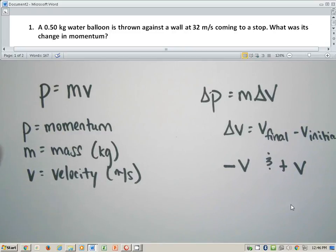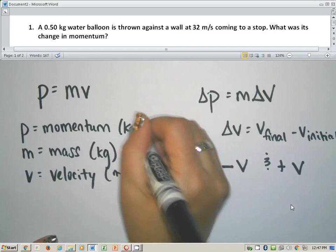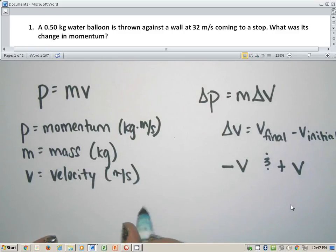We have a momentum equation right here on the left-hand side. I have everything broken down. Momentum is p, mass is m, velocity is v. The only thing that I'm lacking on here is my unit of momentum, which is going to be kilograms times meters per second. You can also call momentum's units newton seconds. I'm going to stick with kilograms times meters per second.